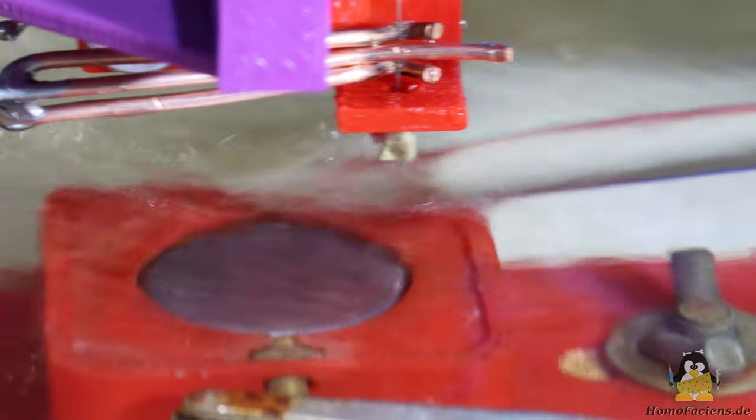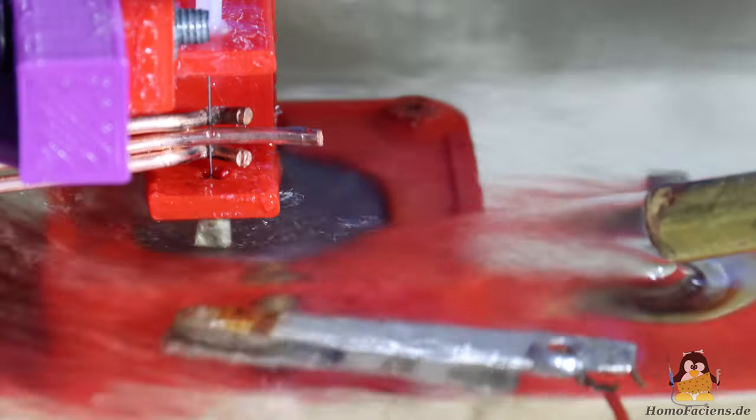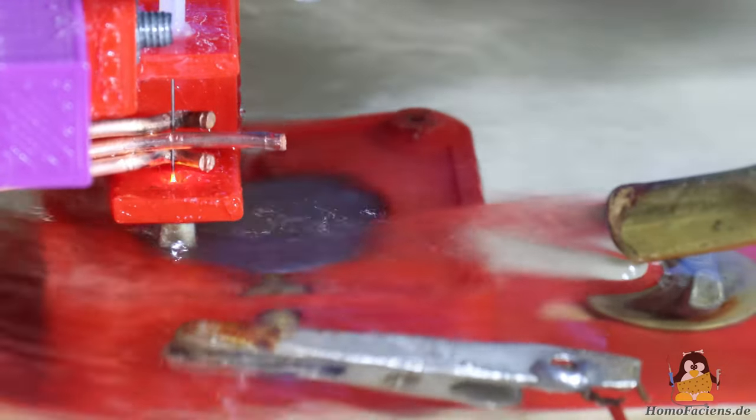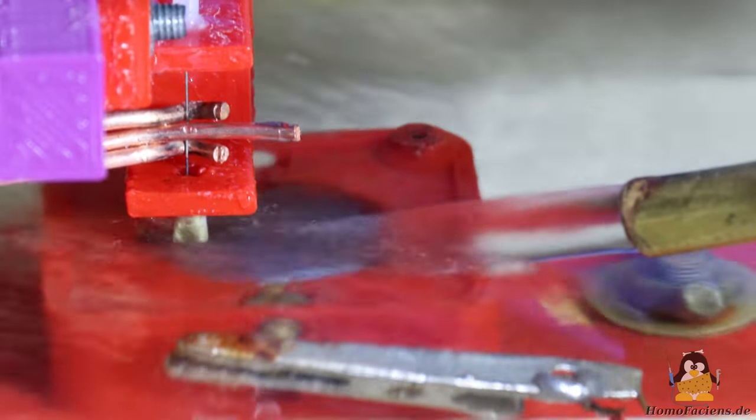In the second run, I increased the power of the pump and directed the water jet at the tip of the electrode wire to prevent it from sticking to the steel disc. And yes, the electrode wire no longer welds to the steel of the workpiece.